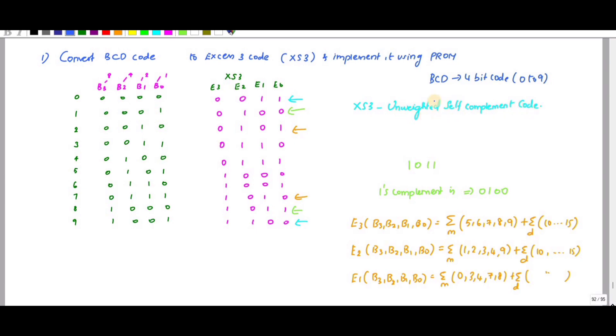What does unweighted mean? It means I cannot assign fixed weight values for E0, E1, E2, and E3. It is not 1, 2, 4, 8.